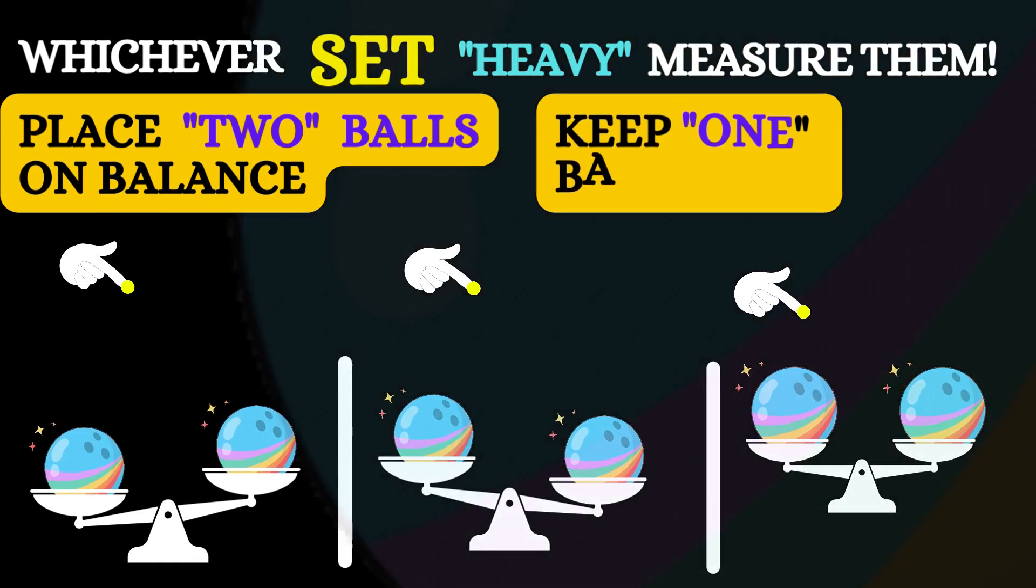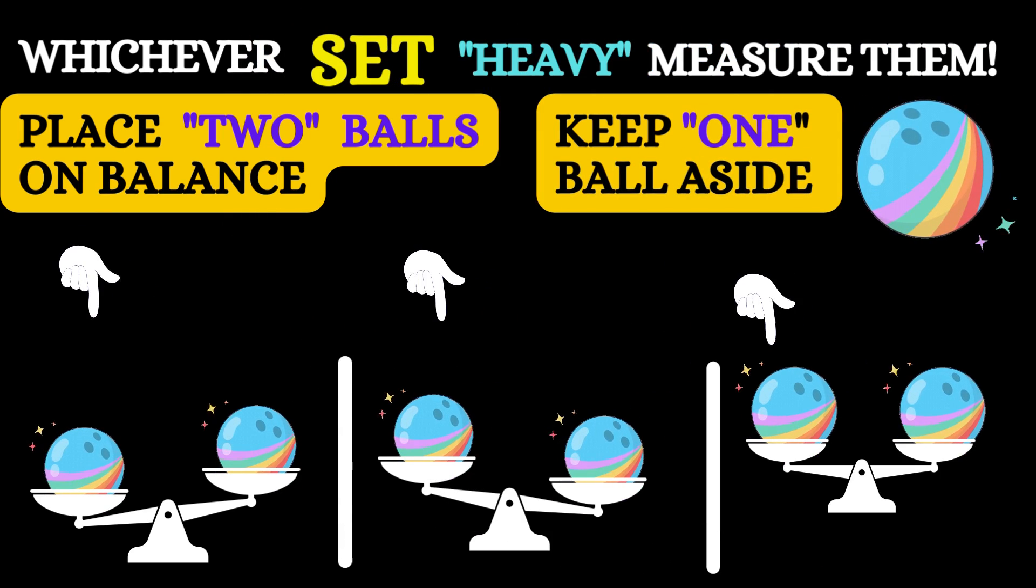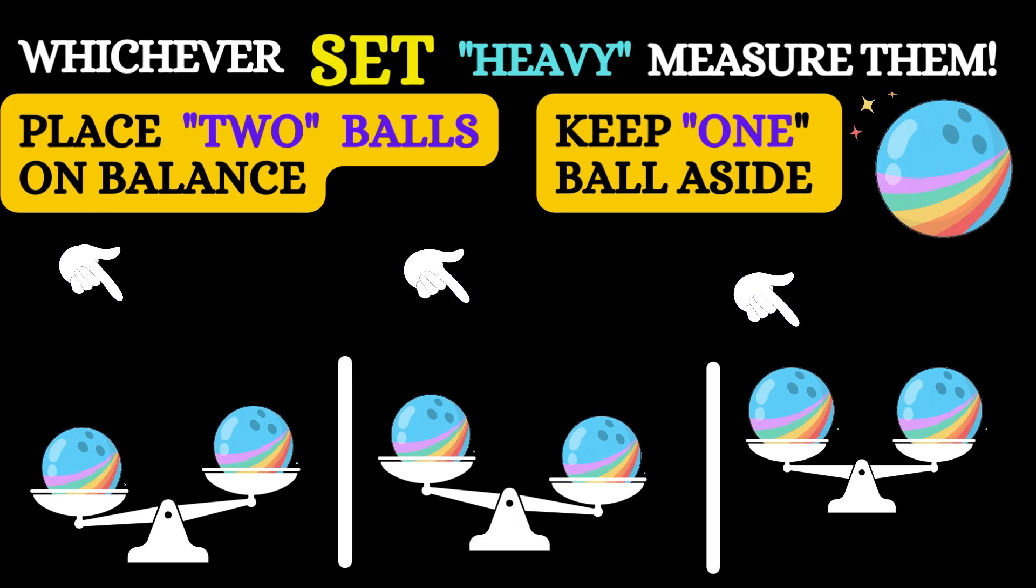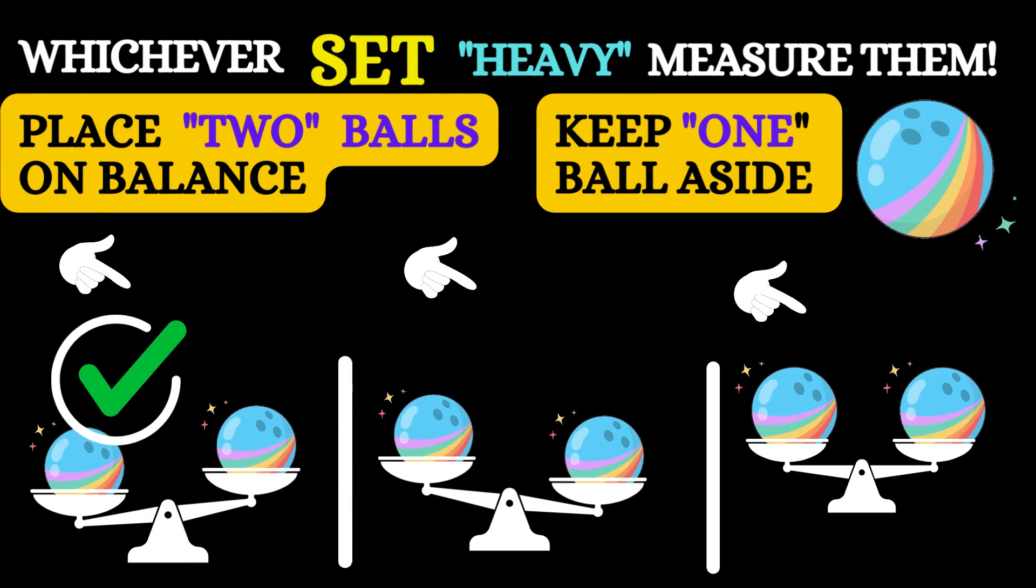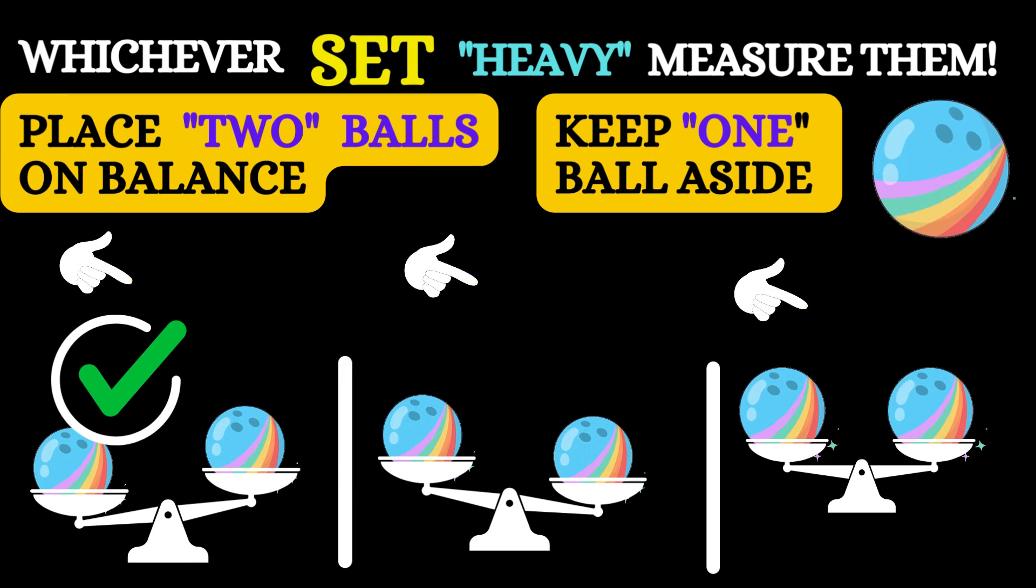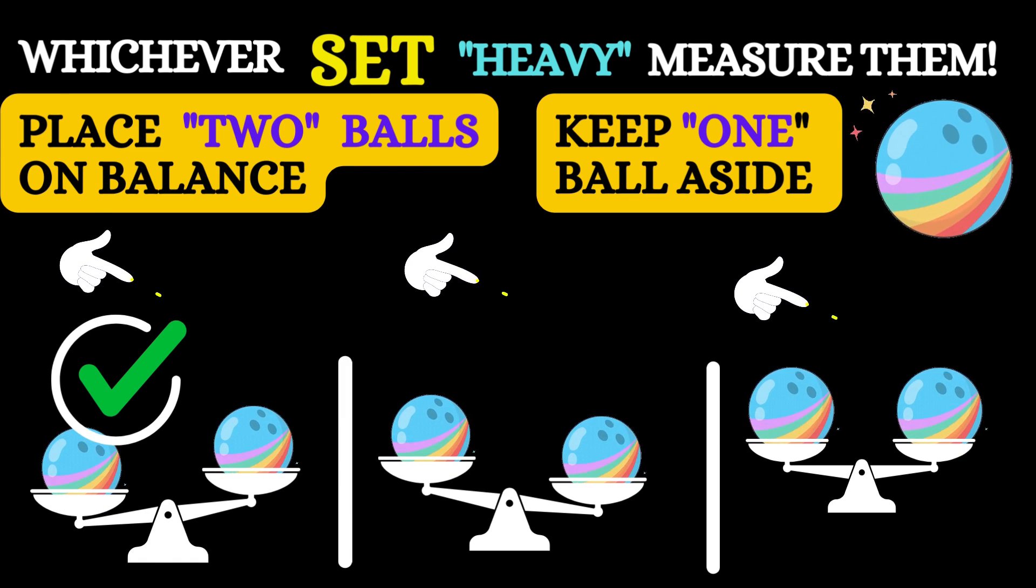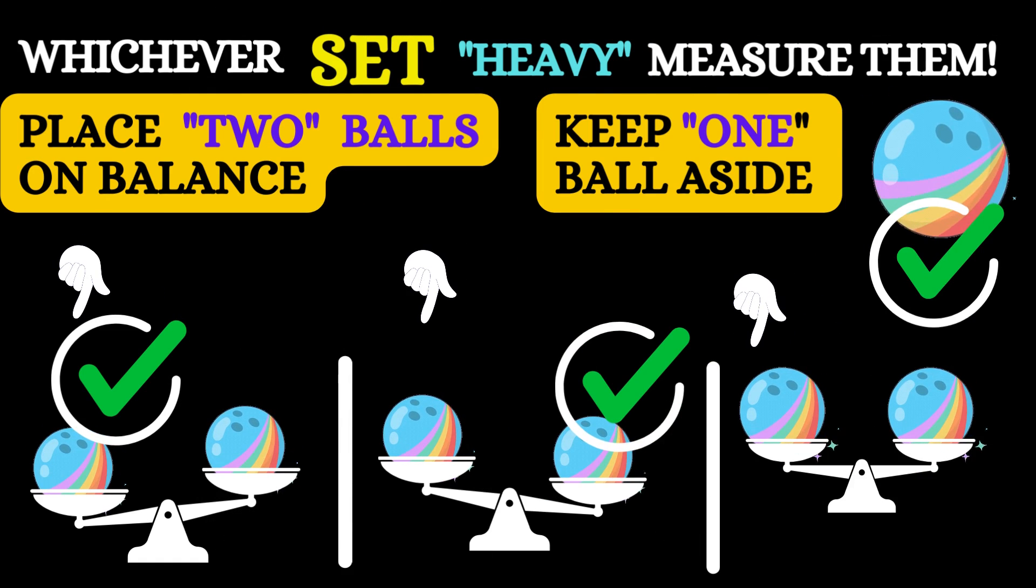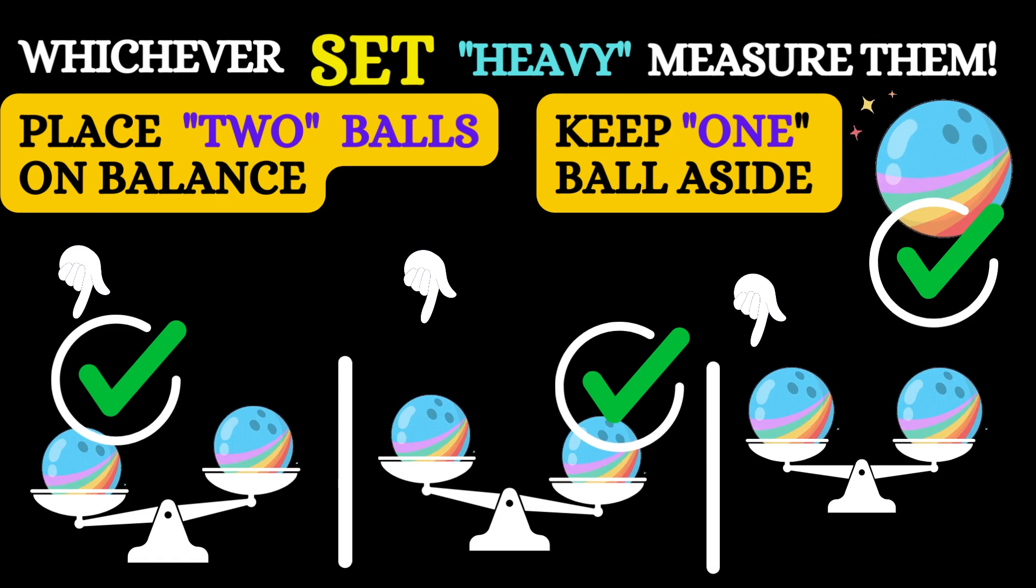And keep one ball aside. If the left hand side ball is heavy in the balance scale, that's the heavier ball. If the right hand side ball is heavy, that's the heavier ball you found. If both are of equal weight, that means the heavier ball is the one which you kept aside.